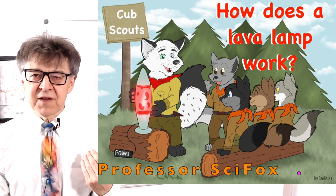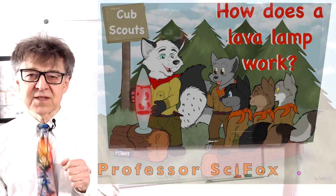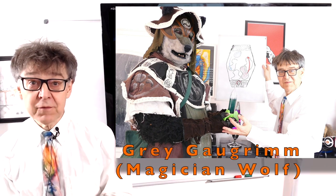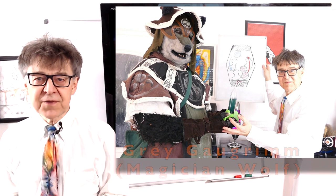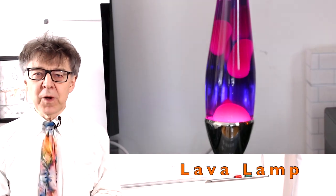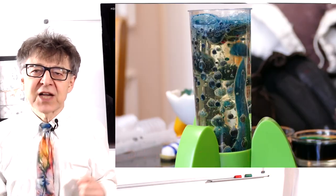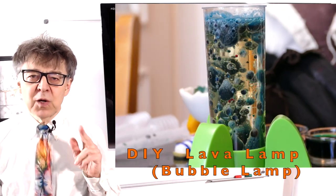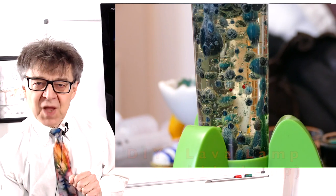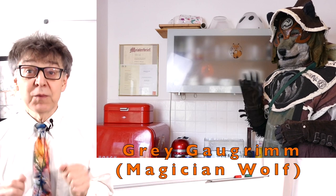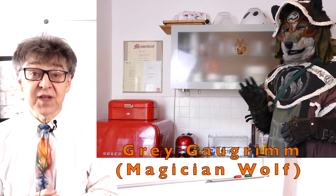I am Professor Sly Fox and together with my friend and assistant Grey Gaugrim, he is actually a magician wolf, we will study scientifically how a lava lamp works and we will also build a kind of lava lamp, actually more of a bubble lamp with simple needs. I'll explain everything here on the blackboard and Grey Gaugrim will conduct the experiments in the kitchen.